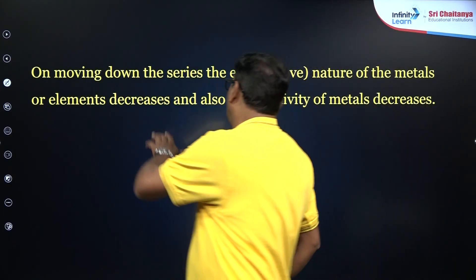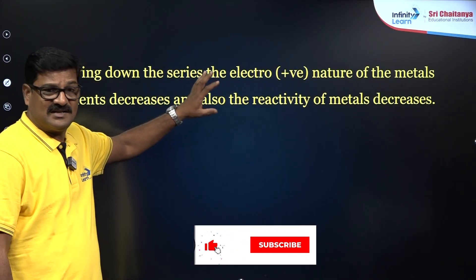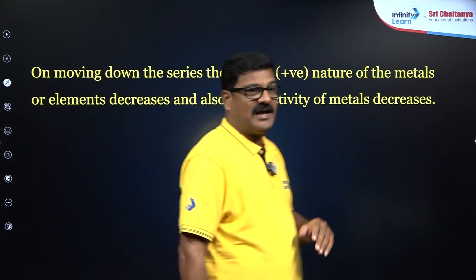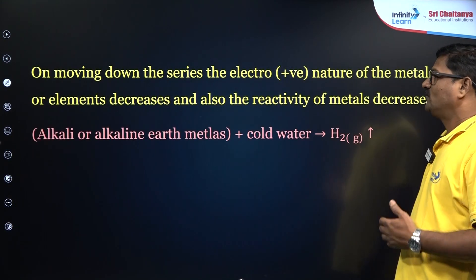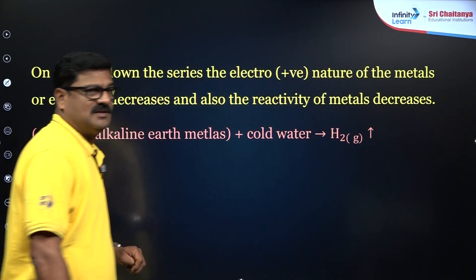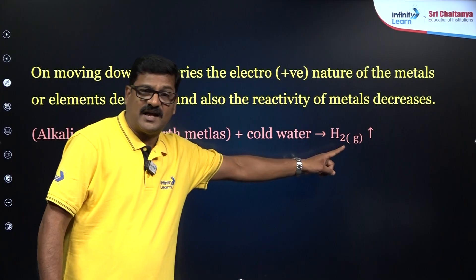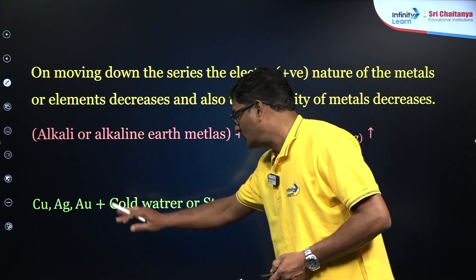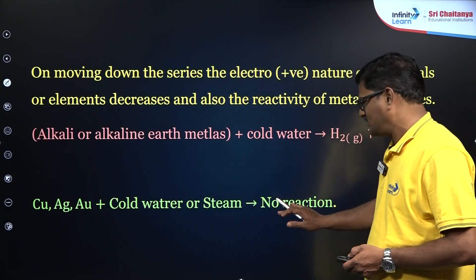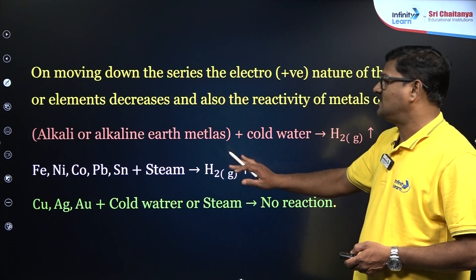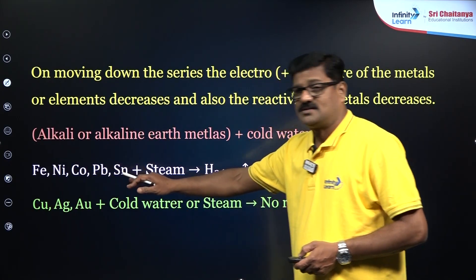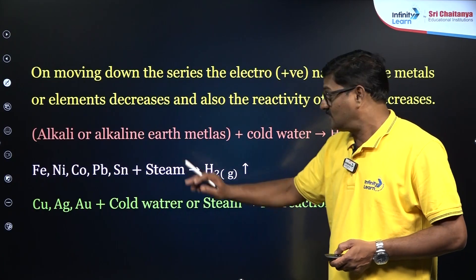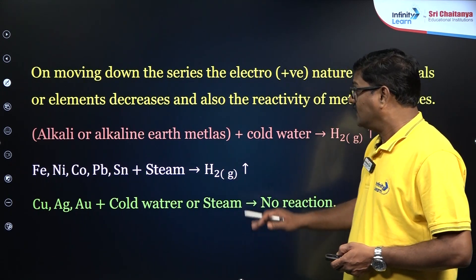Moving down the electrochemical series, the electropositive nature of the metals increases and reactivity also increases. Alkali metals and alkaline earth metals can react with cold water and displace hydrogen gas. Whereas metals like copper, silver, and gold do not react with cold water — there is no reaction even with steam. Whereas metals like iron, nickel, cobalt, lead, and tin can react with steam but not with cold water, and they can liberate hydrogen gas.